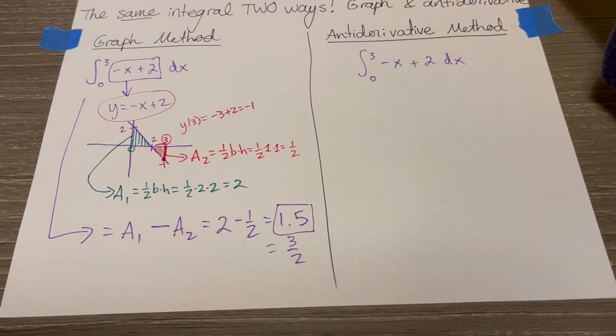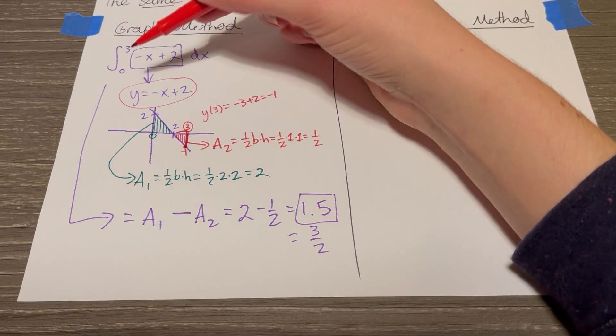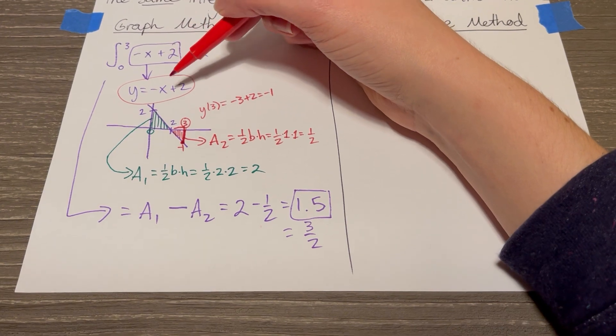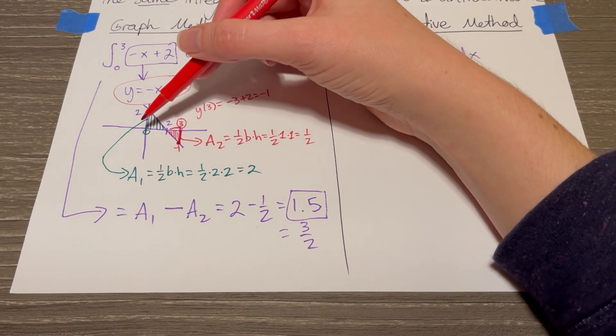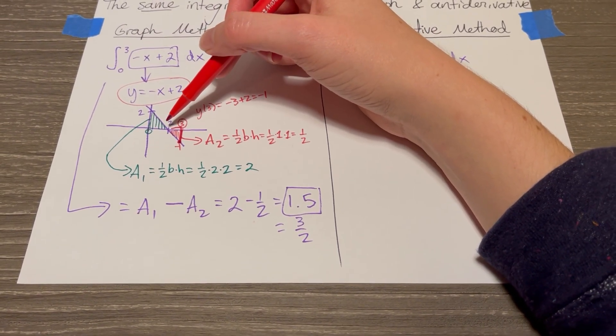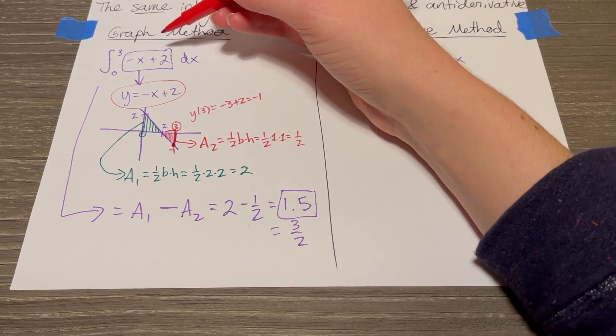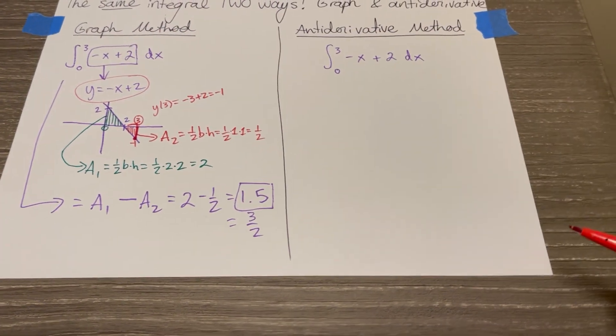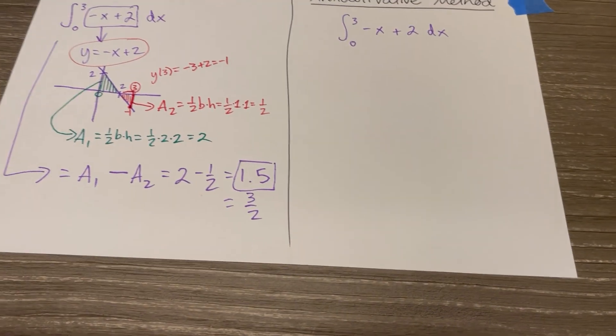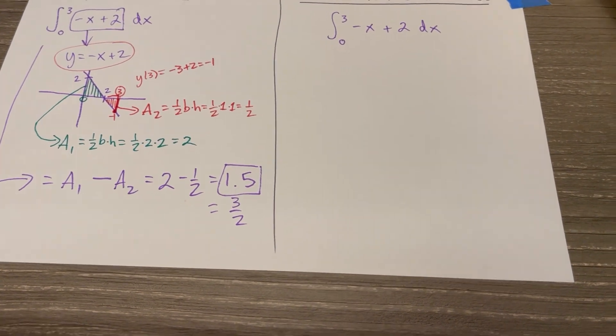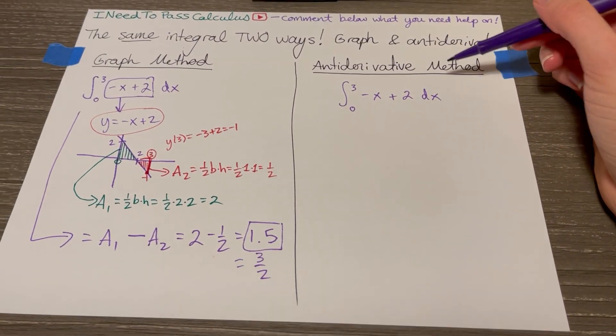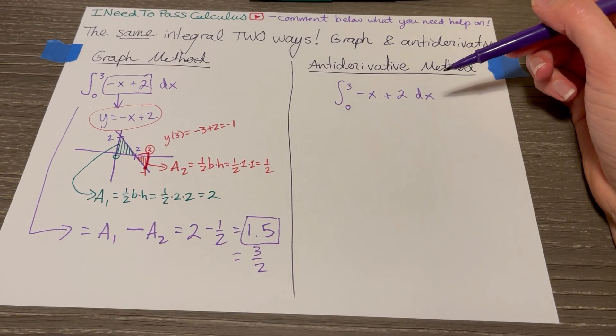The graph method, you just look at the graph of a function. Some functions are hard to graph. This one is easy to graph. And if you have a nice, easy geometric shape, you can avoid calculus altogether and solve this definite integral just using geometry, simple geometry. The more calculus-heavy approach, and what's used for most definite integrals, the antiderivative method.